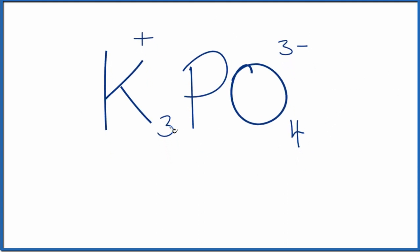To write the number of ions, we'll have three of those potassium ions, K plus, and we'll just have one phosphate ion, PO4 three minus.